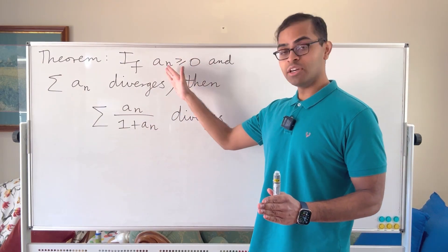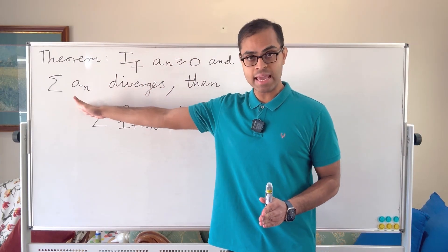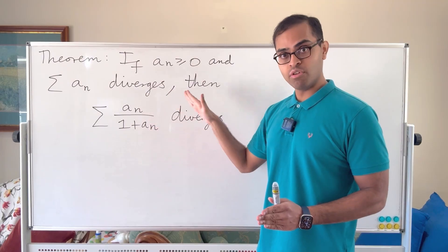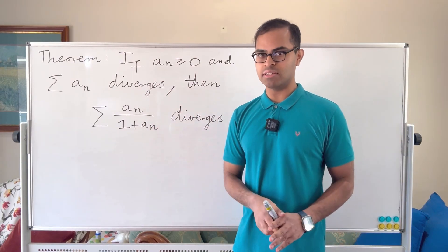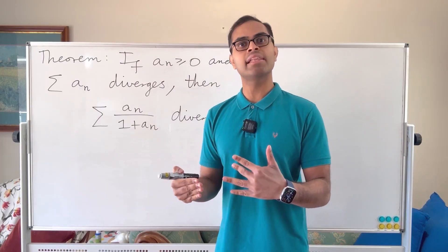It says that if you have a sequence an of non-negative numbers and the series sum an diverges, then so too does the series sum an over 1 plus an. That also diverges. This is going to be good practice with understanding series and sequences on a slightly higher level.